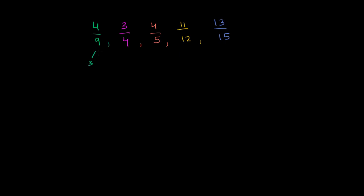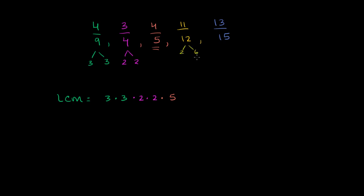9 is the same thing as 3 times 3, so our least common multiple is going to have at least one 3 times 3 in it. And then 4 is the same thing as 2 times 2, so we're going to also need a 2 times 2 in the prime factorization of our least common multiple. 5 is a prime number, so we're going to need a 5. And 12 is the same thing as 2 times 6, which is 2 times 2 times 3.